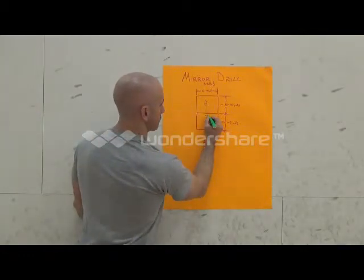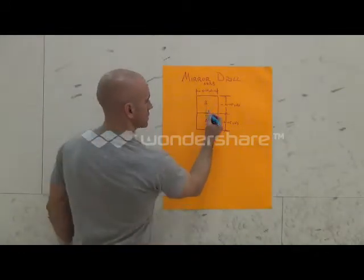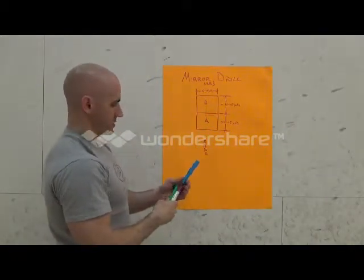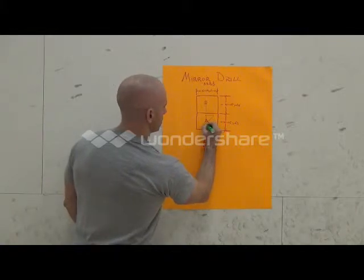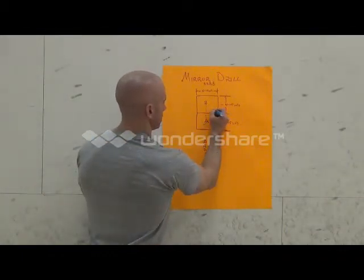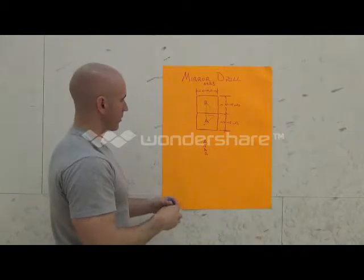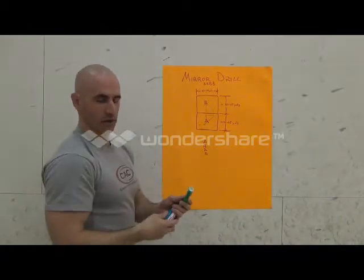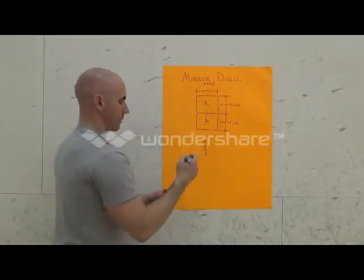Let's say A decides to sprint to their right — B, recognizing this, will also sprint in that same direction, but it will be to B's left. Now let's say A decides to sprint back diagonally toward the opposite corner; then B, recognizing this, would mirror that and sprint diagonally back toward the opposite corner of their square. A might then shuffle a couple of steps to their left, and B, recognizing this, would quickly shuffle a couple of steps to their left as well.